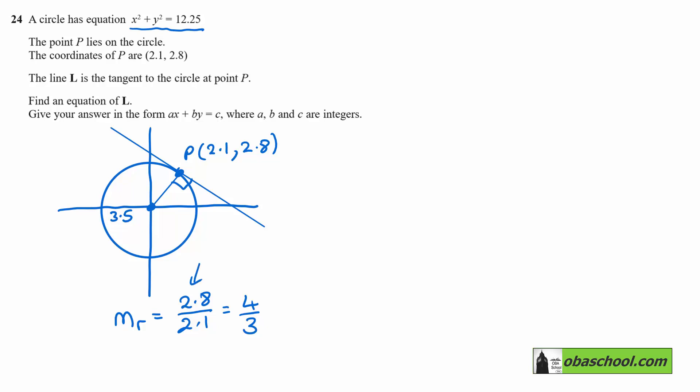I got that because 2.8 is four times 0.7 and 2.1 is three times 0.7. The gradient of L is negative three quarters because when two lines are perpendicular, the product of their gradients is negative one.